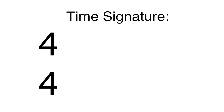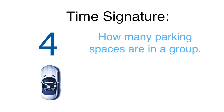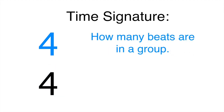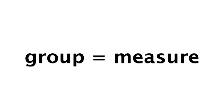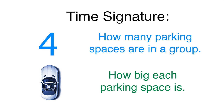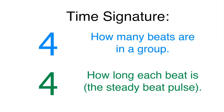Remember those parking spaces? The top number tells us how many parking spaces, or beats, are in a group. We call this group a measure, or a bar. The bottom number tells us the size of the parking space, or how long the beat is. This sets the pulse for the steady beat.